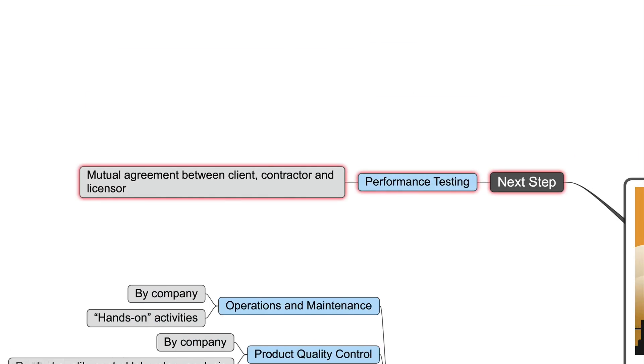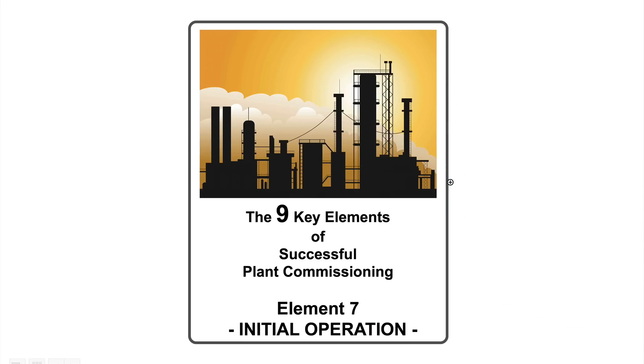Then, when this is really successfully finished, everybody says we are ready for the next step, the performance test. Then we can go further. But this has to be a mutual agreement between all involved parties, which means between the client, the contractor, and the licensor. Maybe the contractor thinks everything is ready and nice, but the licensor says no, we have a problem in this unit and with this process parameter. Then you cannot go further. It doesn't make sense. Each of the involved parties has to agree for our next step, the performance testing.